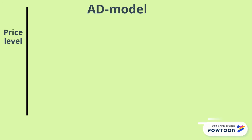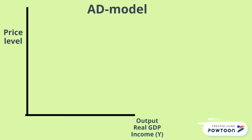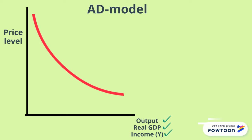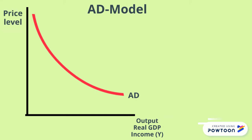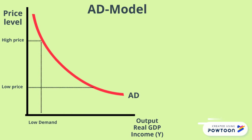Let's construct the AD graph. On the Y axis it will be price level, while on the X axis it could be any one of these three: output, real GDP, or income. Remember the short form for income is the letter Y. AD is always sloping downwards. There are many reasons for this, but the main reason is that when the price is too high, people will demand less, and when the price level is low, people will demand more.